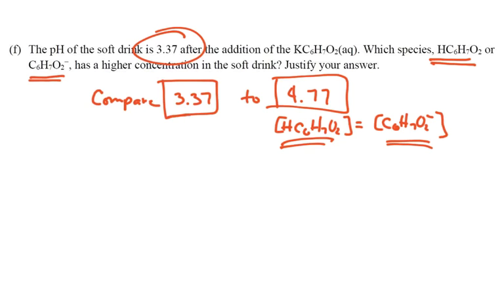Here at 3.37, we say that's more acidic. It's more acidic, so therefore I must have more of my acid. Which species has a higher concentration? The sorbic acid, because 3.37 is more acidic than 4.77. We are comparing this number to the pKa, the 4.77. That's the FRQ.